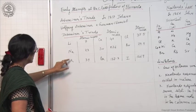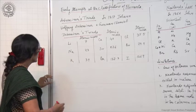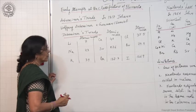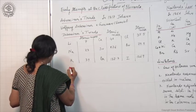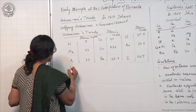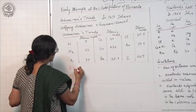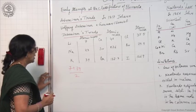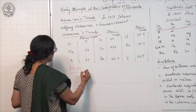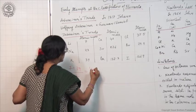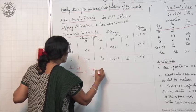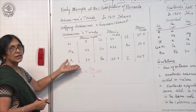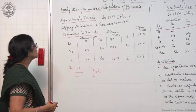Lithium, sodium, potassium — let us see what is the average of the atomic masses of lithium and potassium. When you add up the atomic masses of lithium and potassium and divide by 2, you get 23. So this satisfies the conditions put by Dobereiner.